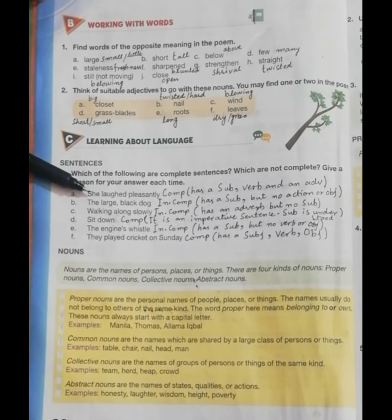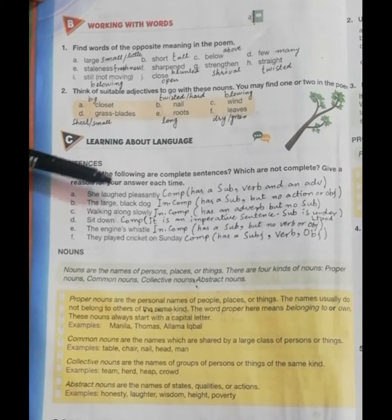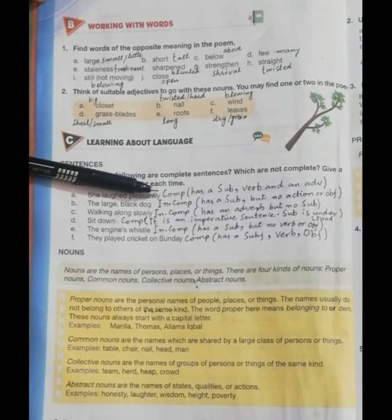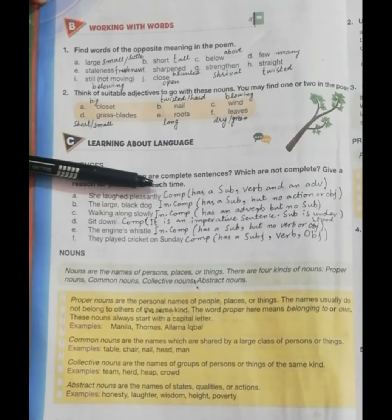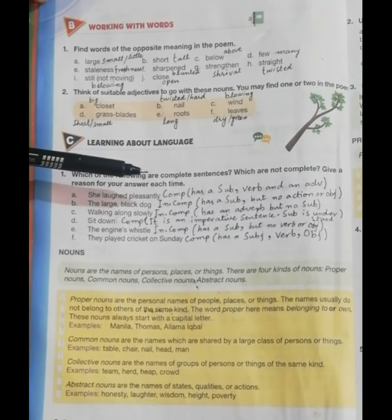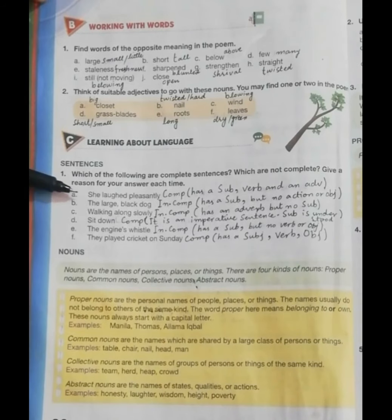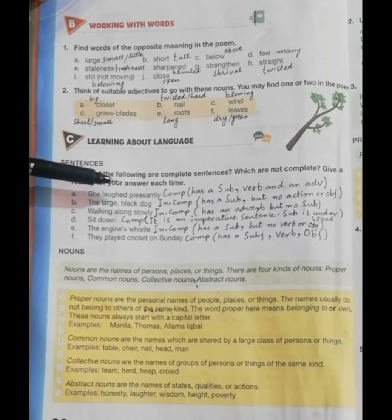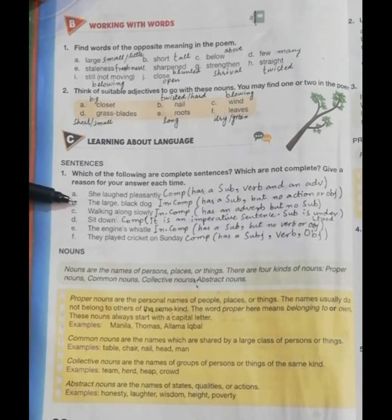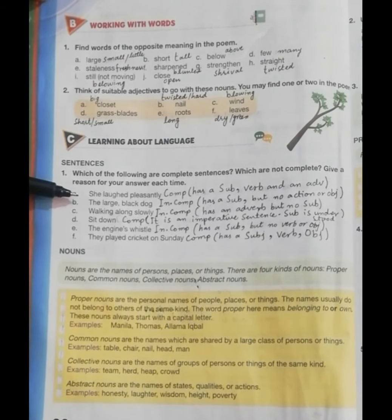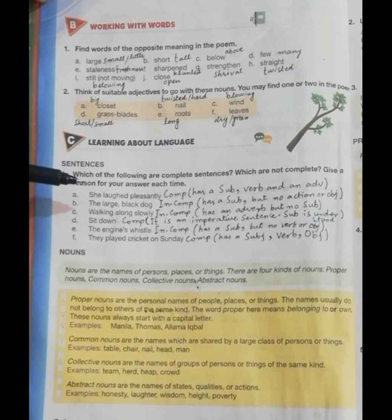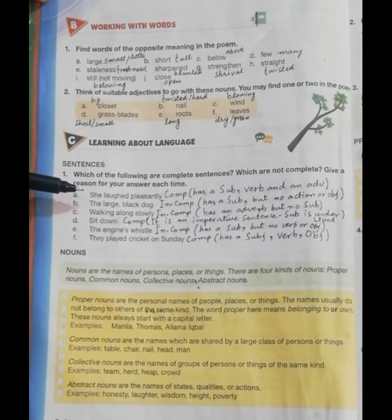The first sentence is 'She laughed pleasantly.' This sentence is complete because it has a subject, a verb, and an adverb. The second sentence is 'The large black dog.' This sentence is incomplete — rather it's a phrase, because it has a subject but no action, object, or predicate.